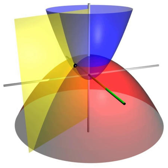Another common coordinate system for the plane is the polar coordinate system. A point is chosen as the pole and a ray from this point is taken as the polar axis. For a given angle θ, there is a single line through the pole whose angle with the polar axis is θ, measured counterclockwise from the axis to the line. Then there is a unique point on this line whose sine distance from the origin is r for a given number r.